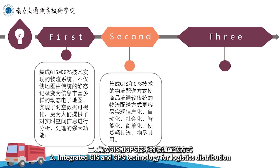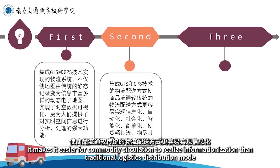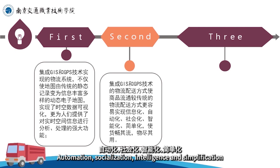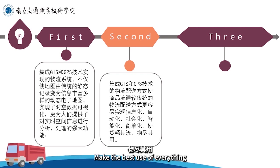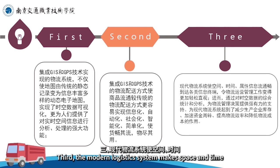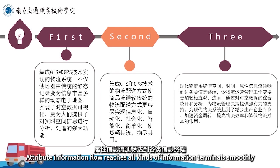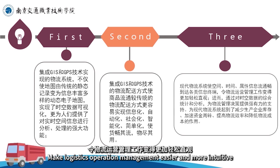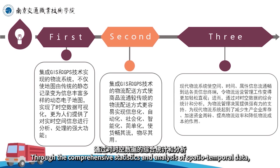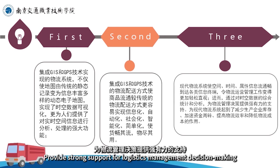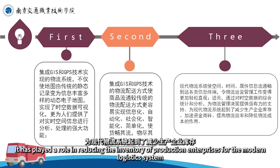GIS与GPS为我们带来了以下价值：1. 集成GIS和GPS技术实现的物流系统，不仅是传统的静态记录，更提供信息丰富多样的动态电子地图，实现了时空数据可视化，为人们提供了对实时空间信息进行分析处理的强大功能。2. 集成GIS和GPS技术的物流配送，使商品流通较传统方式更容易实现信息化、自动化、社会化、智能化、简单化。3. 现代物流系统使空间时间属性信息流通畅达，令物流运营管理工作变得更加轻松直观，为物流管理决策提供强有力的支持。